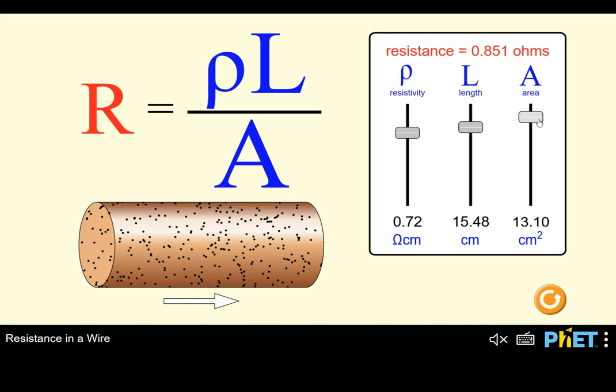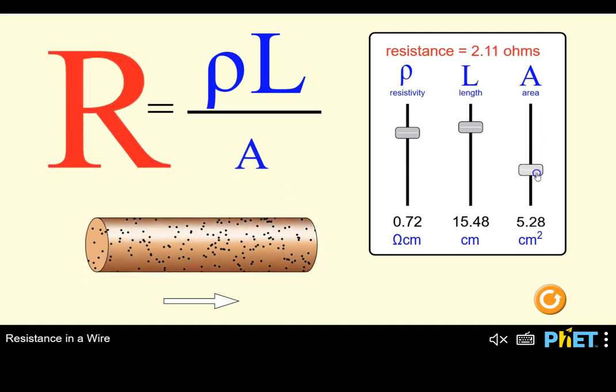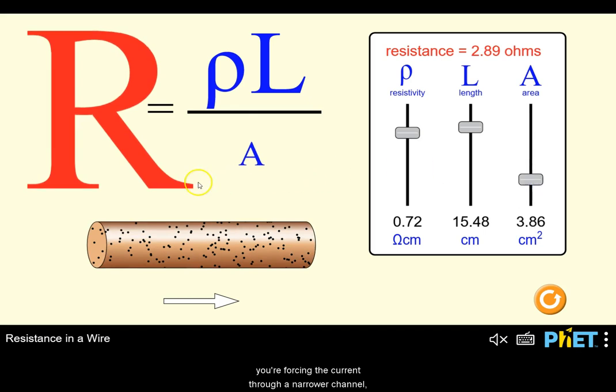Conversely, if you reduce the area, you are forcing the current through a narrower channel, which increases resistance.